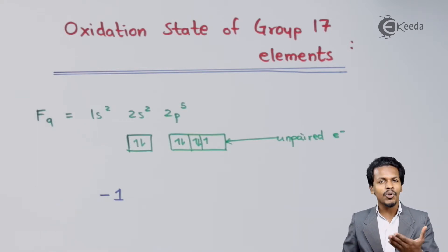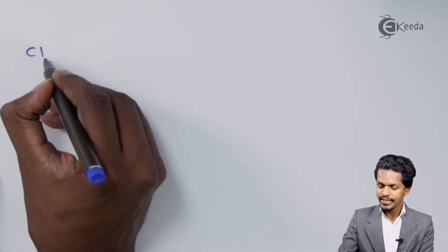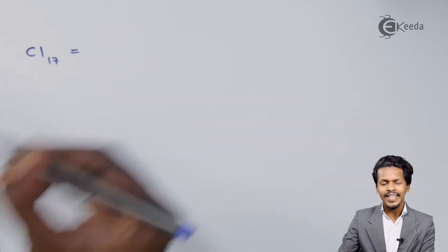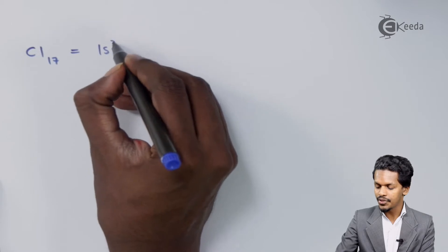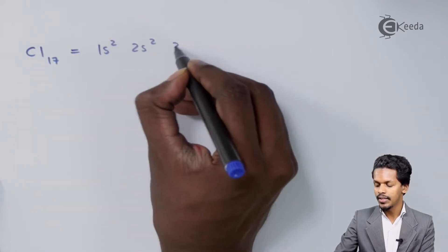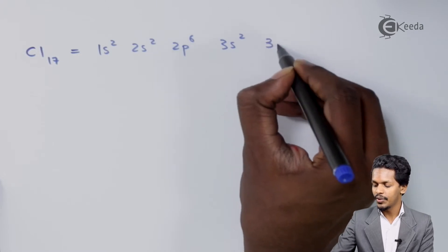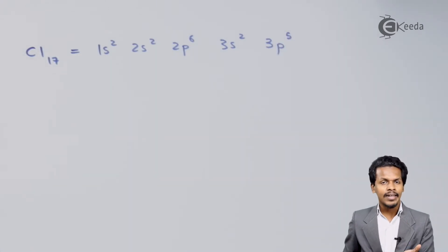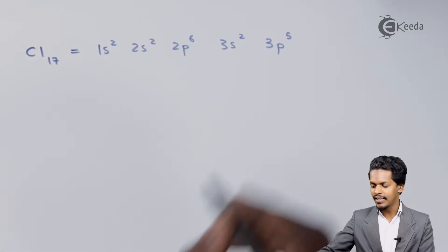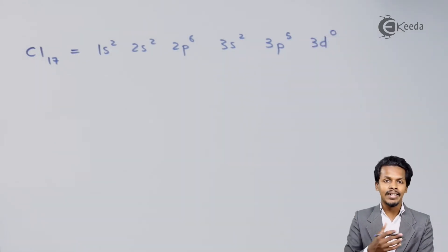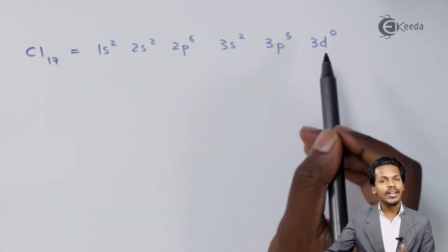So that was related to Fluorine. Now let me talk about Chlorine, that is Cl with atomic number 17. We could write the electronic configuration as 1s2, 2s2, 2p6, 3s2, 3p5. And since there is no electron in the d orbital — there is a possibility of d orbitals and d subshell — but the thing is there is no electron in that.